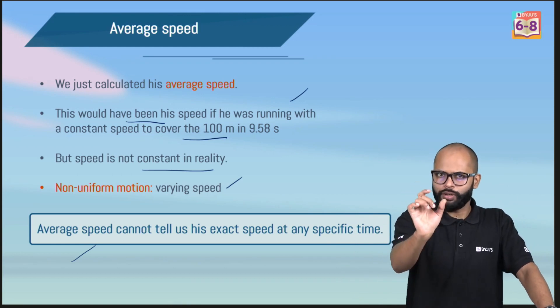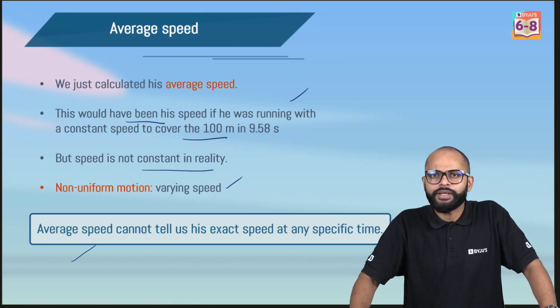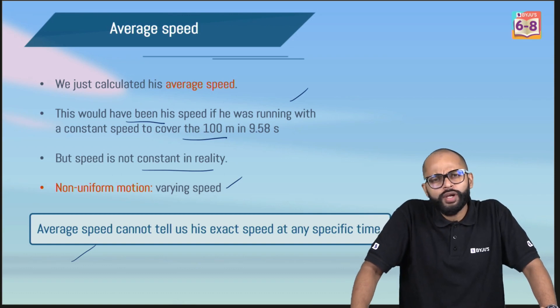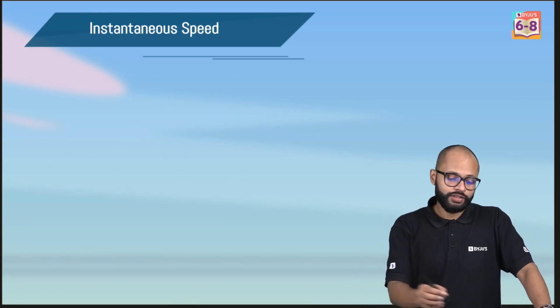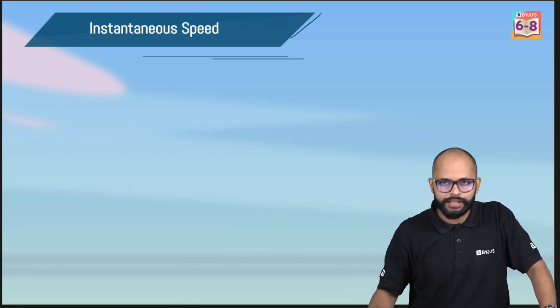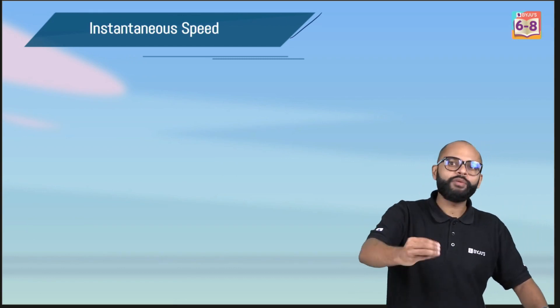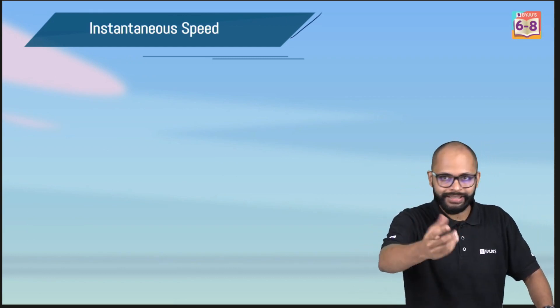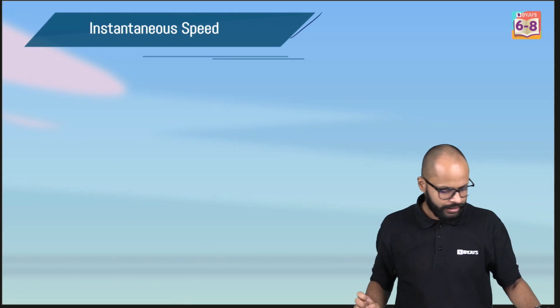But what do we need? There was also a top speed. How did we get to that? There's no way? There is. What we are trying to find is instantaneous speed. At any particular moment, what speed he was running with. That is what we call as instantaneous speed. There's a word instant in this, means at that particular moment.